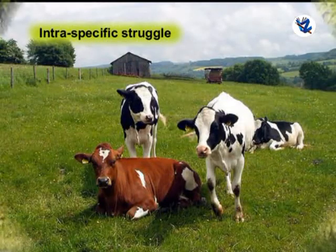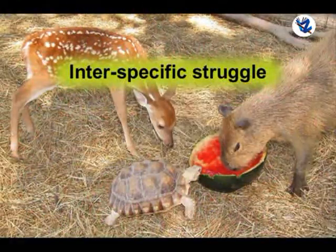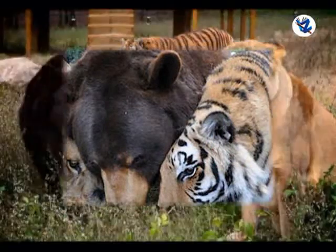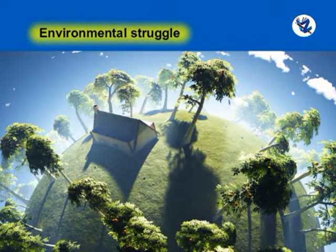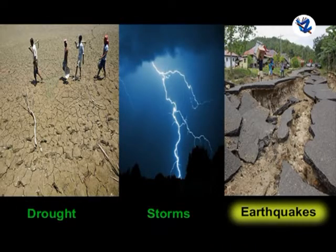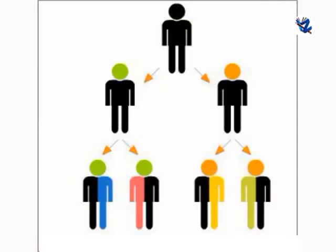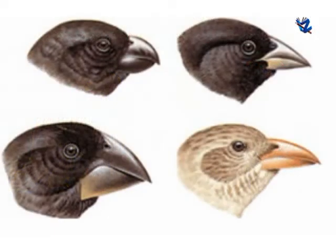Intraspecific struggle is competition among individuals of the same species. Interspecific struggle is the struggle between organisms of different species living together. Environmental struggle is the struggle of all living forms against adverse environmental conditions such as natural calamities, heat, cold, drought, storms and earthquakes. Variations are the differences between individuals of the same species and may be harmful, neutral or useful. According to Darwin, the useful variations are preserved and passed on to their offspring.